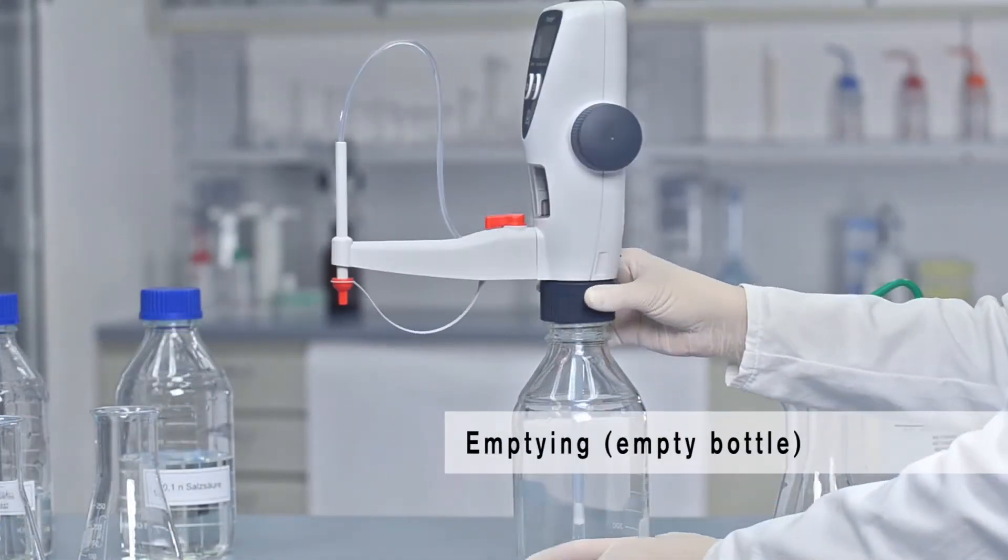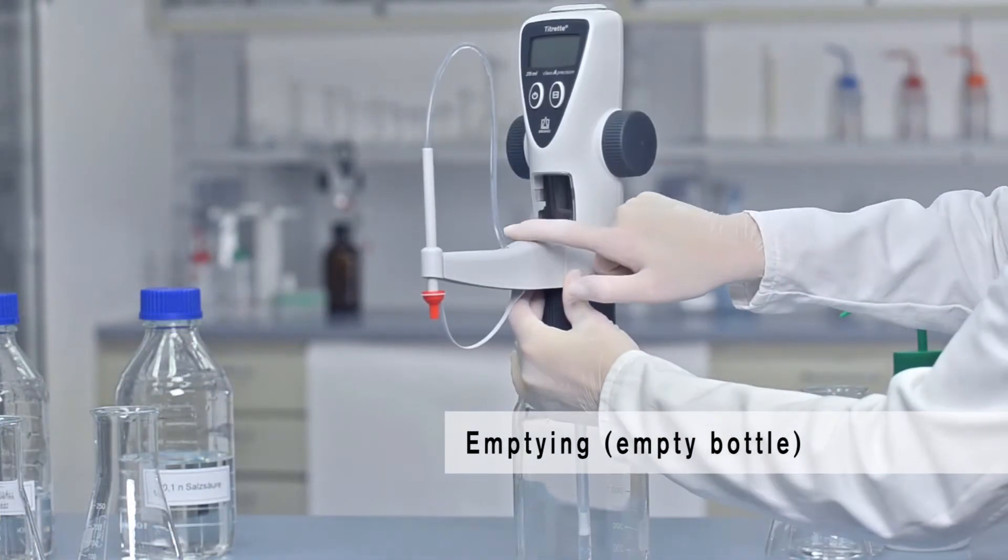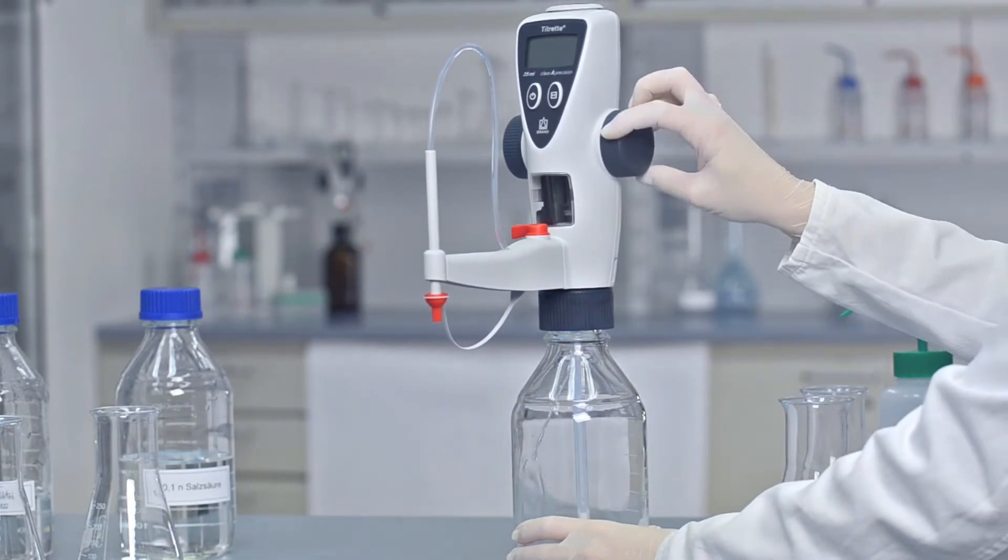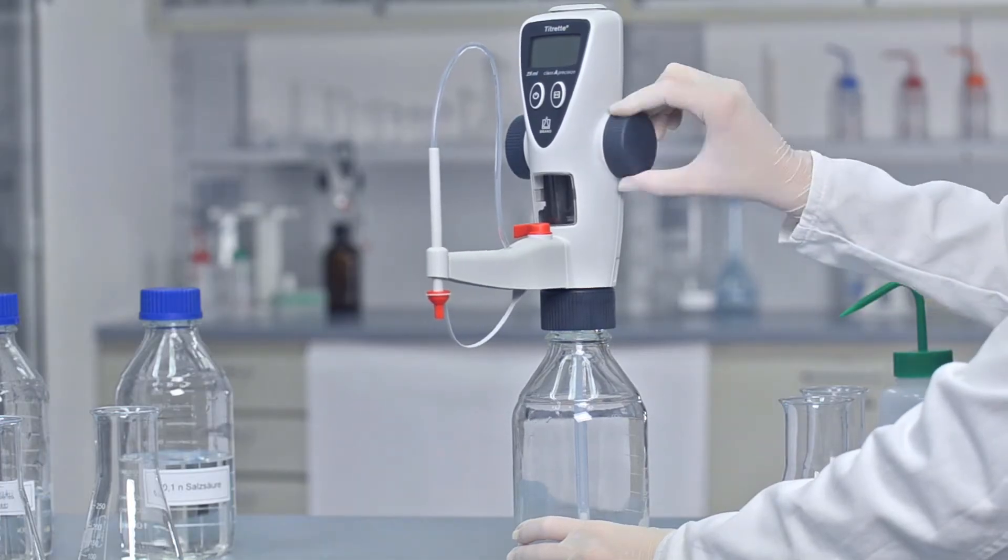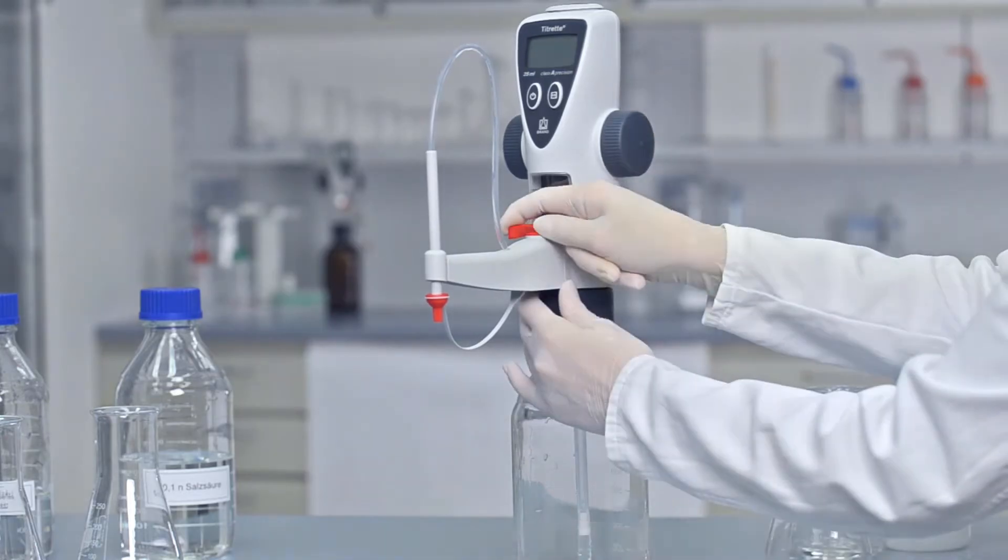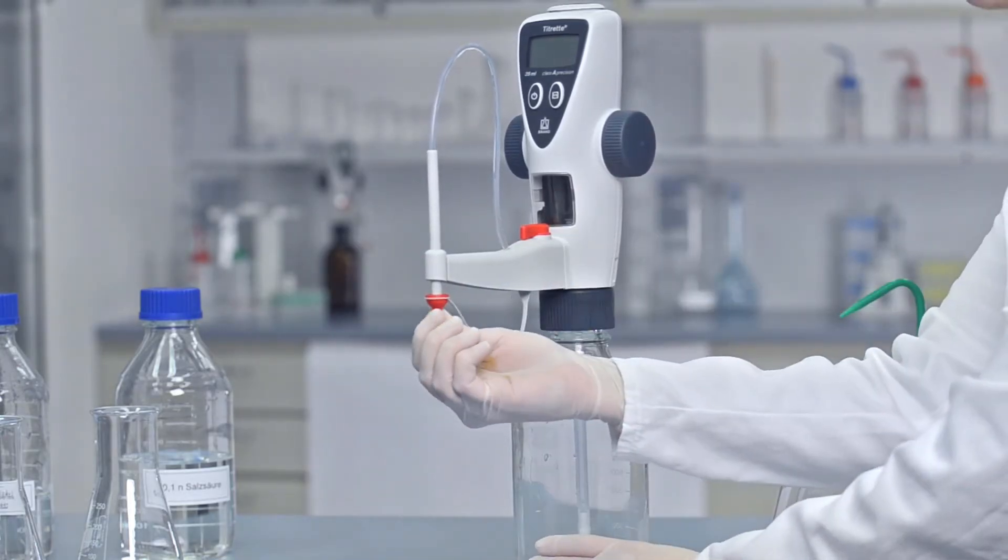Next, attach the Titrette onto an empty bottle and empty the instrument completely. To do this, move the piston up and down several times at both valve settings.